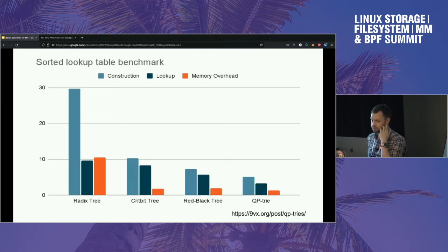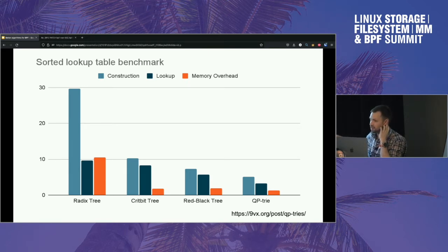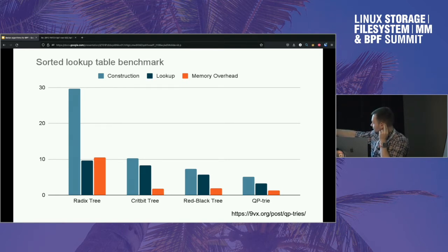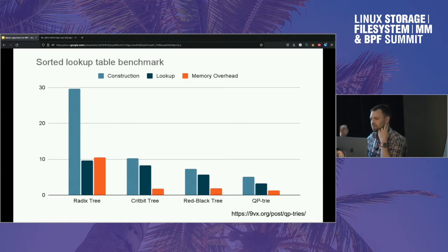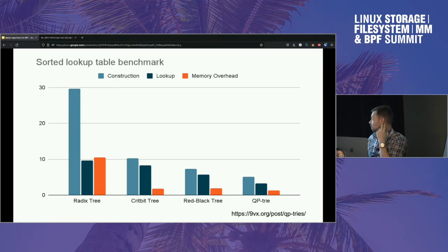I have numbers from a blog post where the author took a 200-megabyte text file and built a lookup table from all the words, benchmarking four implementations: radix tree, crit-bit tree, QP trie, and red-black tree. Crit-bit tree is similar to QP trie but less memory efficient because it only branches two ways at each node, while QP trie uses clever tricks to store multiple pointers compactly. According to that benchmark, the QP trie stands up against red-black tree nicely in terms of both memory usage and performance.